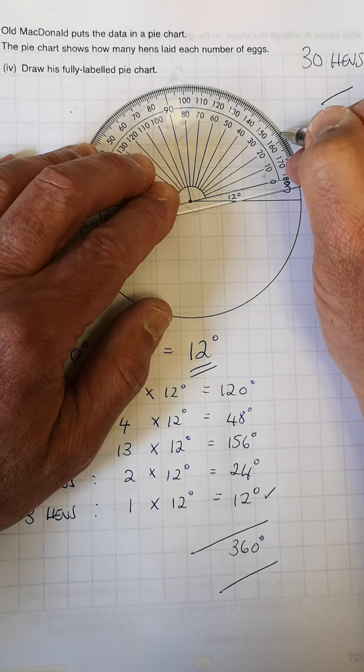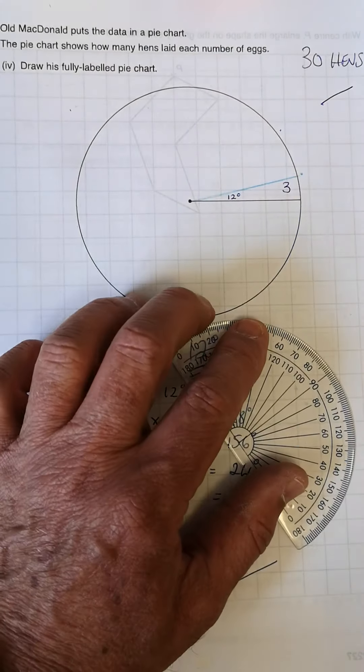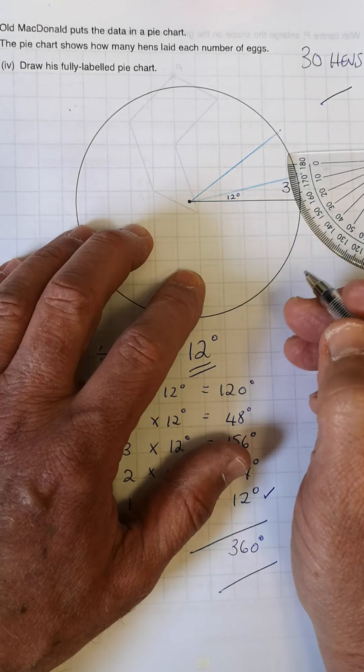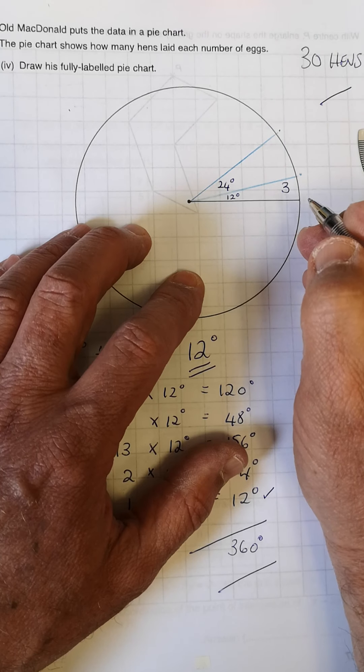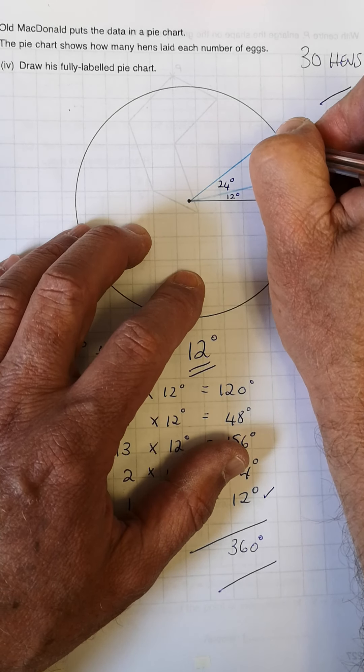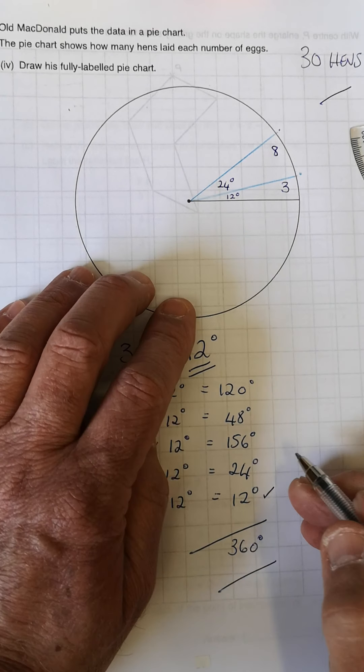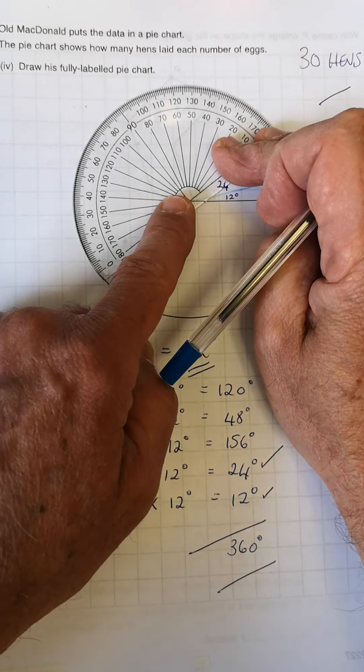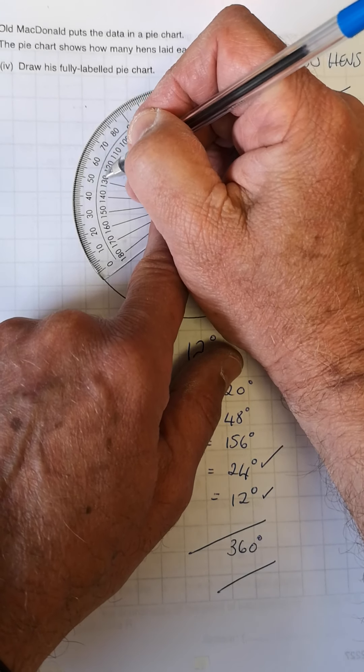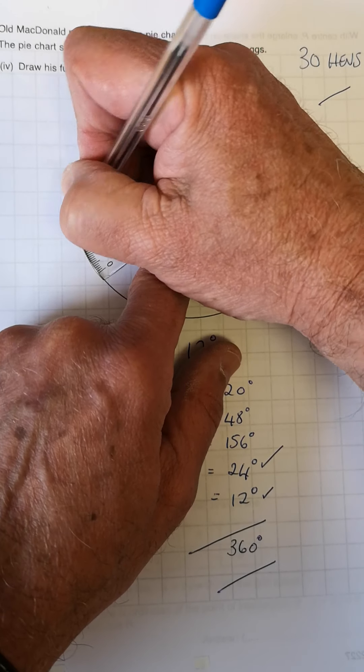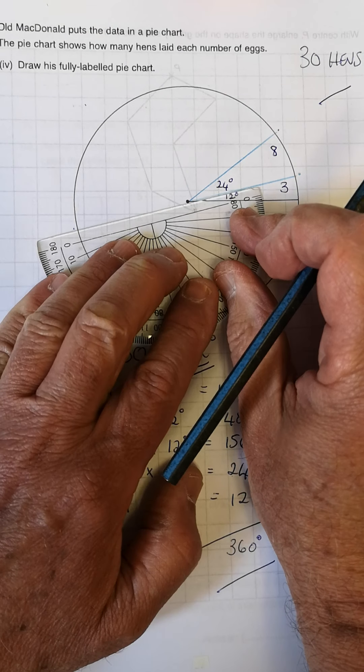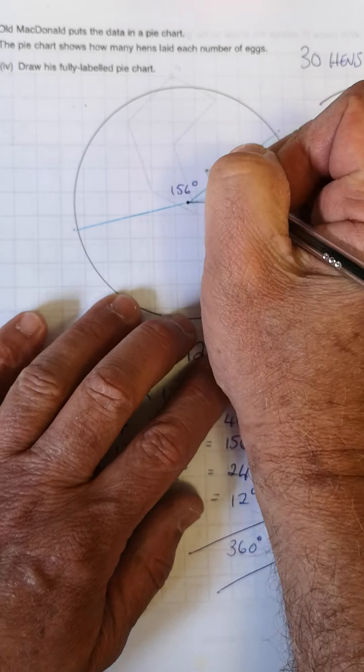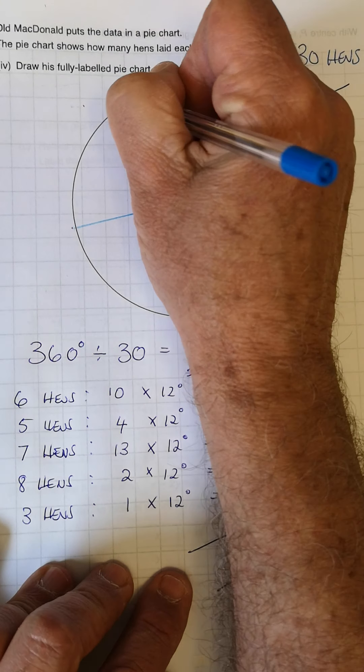And once you've done that, nice and accurately, nice and neatly, fill in the information, twenty-four degrees and the eight hens. Now, next measurement goes to that line. We'll do the hundred and fifty-six. So we know it's going to go beyond ninety. Ninety, hundred, hundred and ten, hundred and twenty, hundred and thirty, hundred and forty, hundred and fifty. There's a hundred and fifty-five, hundred and fifty-six. And fill in the details, one hundred and fifty-six degrees, and fill in the seven.